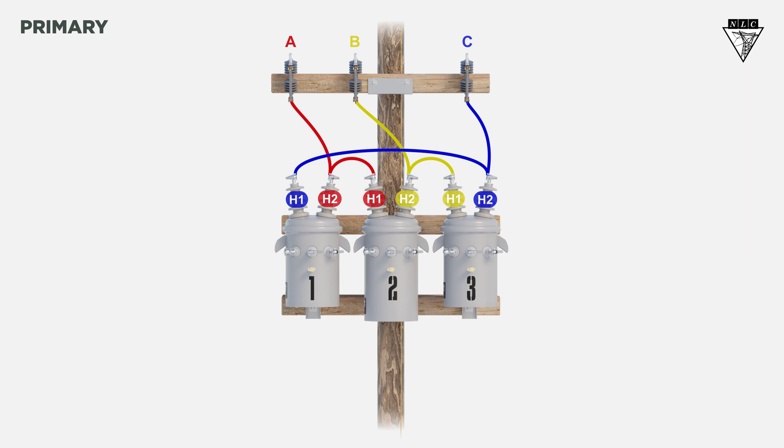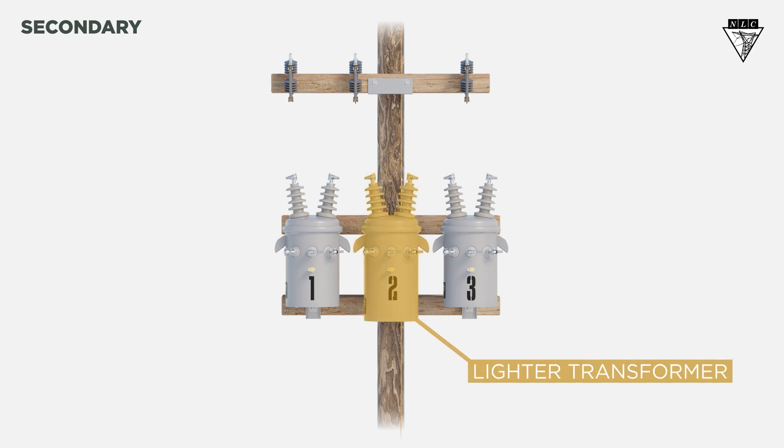Now, let's look at the secondary side. Delta secondaries don't allow all three transformers to share the single-phase load equally. Therefore, one transformer must provide the lighting load, called the lighter transformer.